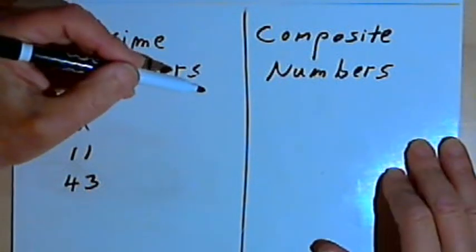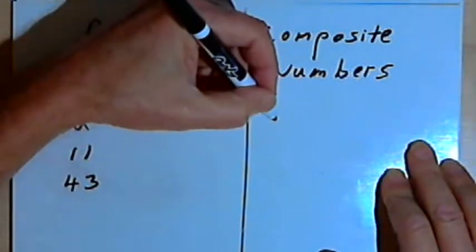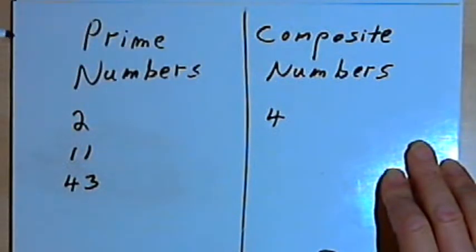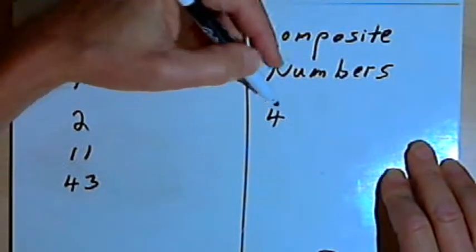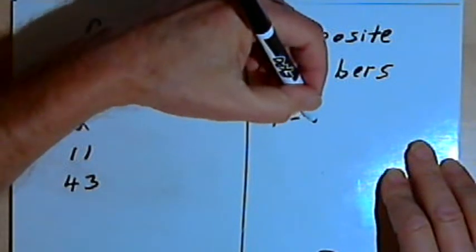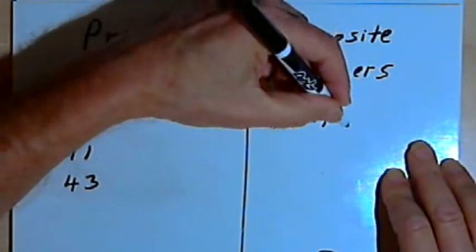Now there are also composite numbers. So a number like 4 is a composite number. I can divide it by more than just itself and the number 1. I could divide 4 not only by 1 and 4, but also by 2.